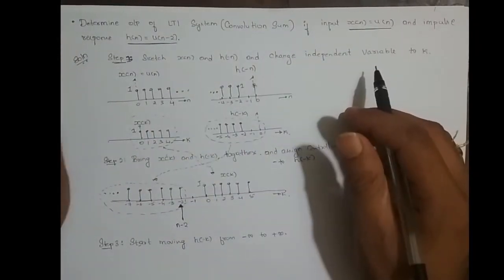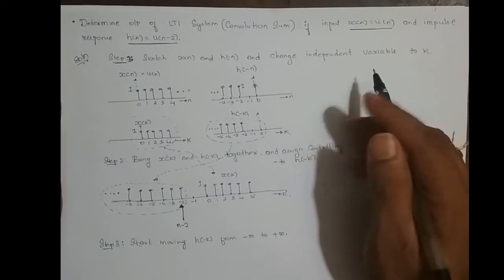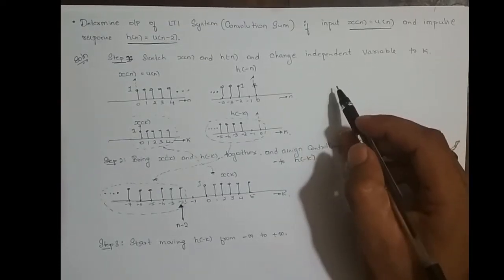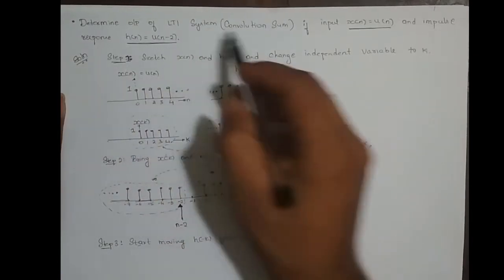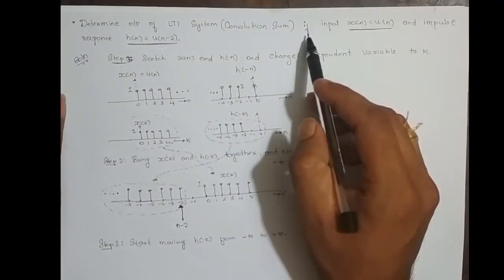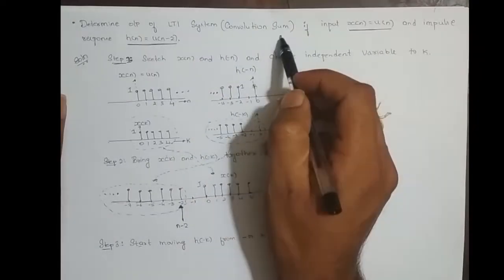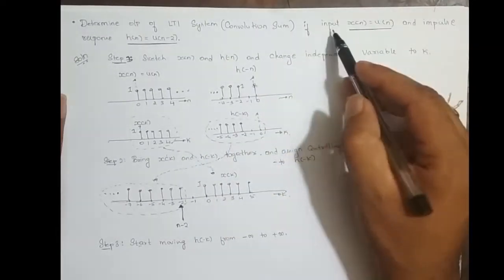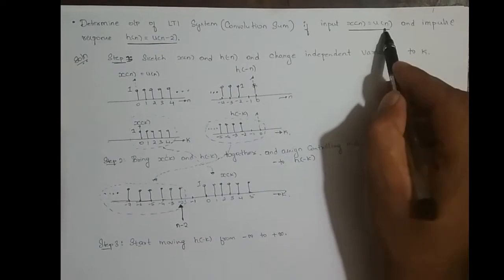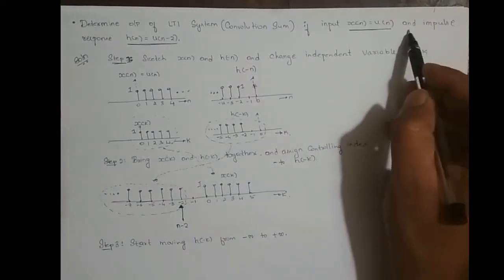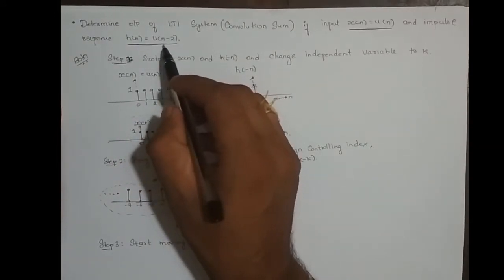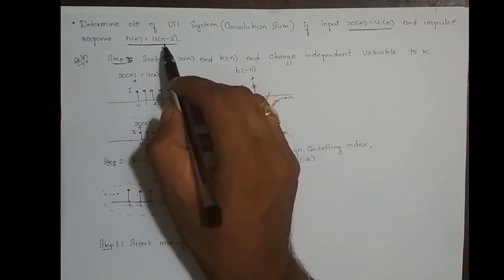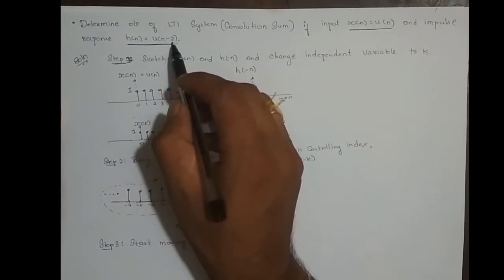In this video I will take up an example to solve the convolution sum of an infinite length sequence. The problem is to determine the output of an LTI system — that is the convolution sum of a discrete time LTI system — where the input x(n) is u(n), the unit step function, and the system's impulse response h(n) is equal to u(n-2), the unit step function shifted right by two samples.